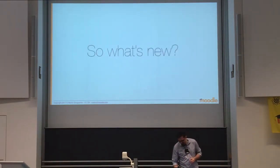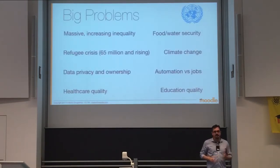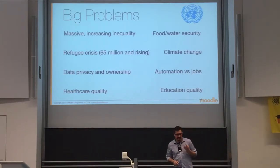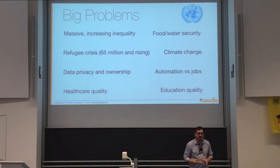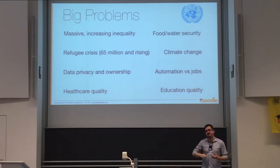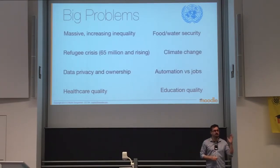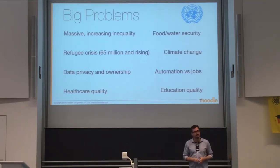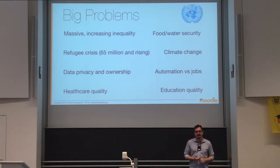What's new in the world? Well, we have big, serious problems. Massive, increasing inequality — the rich are getting richer, the poor are getting poorer. In my country, which is supposedly a rich Western country, a single person with a job cannot afford a house to live in. Food and water security — these are the big problems if you go and look at the UN website. The UN uses Moodle too, by the way. Simple things like food and water security is a problem.